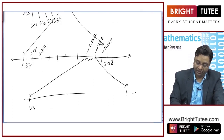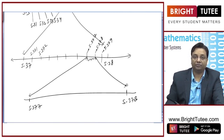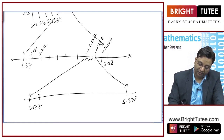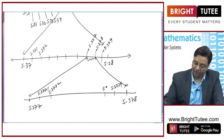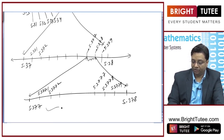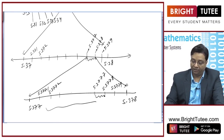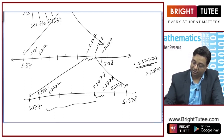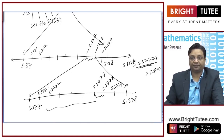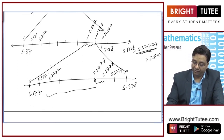This magnified view shows 5.377 on one end and 5.378 on the other. Dividing again into 10 equal parts gives: 5.3771, 5.3772, and so on up to 5.3779. The number 5.37777 lies between 5.3777 and 5.3778, because it is greater than 5.3777 and lesser than 5.3778. I will magnify this portion once more.